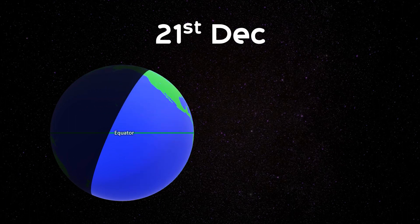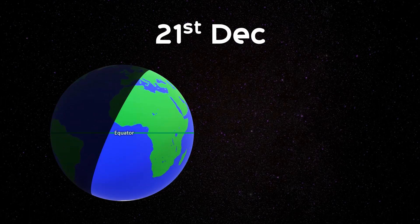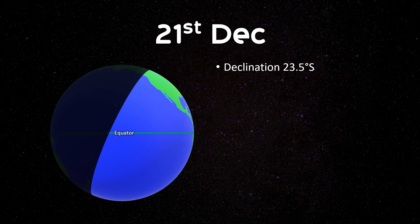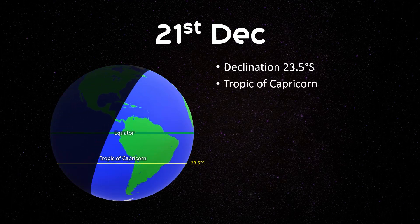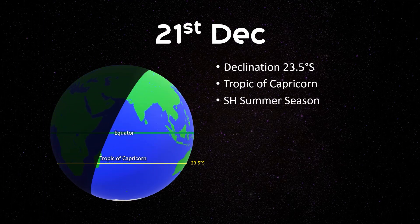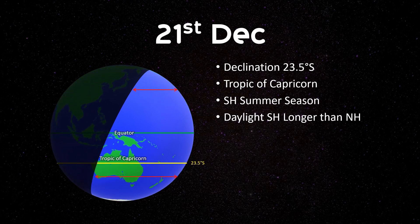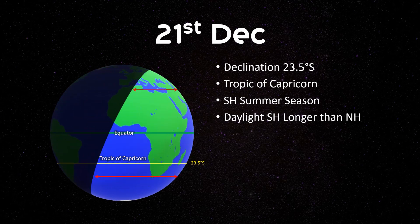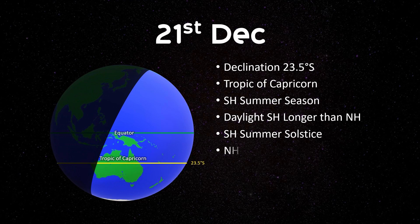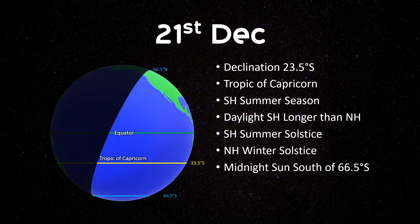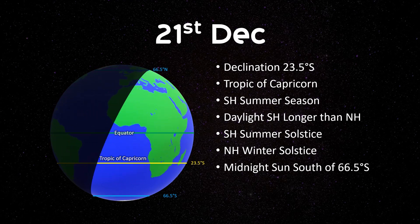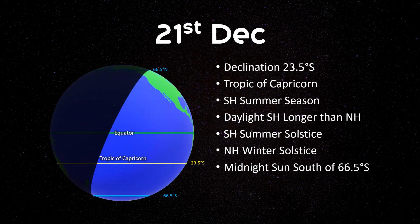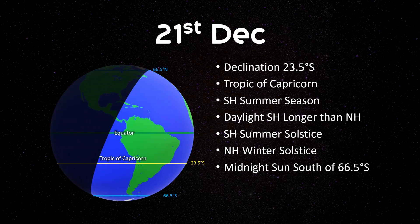On the 21st of December, the sun reaches its maximum southerly declination at 23.5 degrees south. This latitude is known as the Tropic of Capricorn. During this time, the southern hemisphere enjoys its summer season. The hours of daylight in the southern hemisphere are longer than those in the northern hemisphere. This period is referred to as the southern hemisphere summer solstice, or the northern hemisphere winter solstice. The midnight sun phenomenon can be experienced south of latitude 66.5 degrees south on the 21st of December, whereas north of latitude 66.5 degrees north will experience 24 hours of darkness.